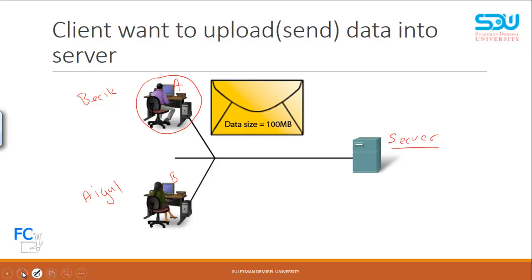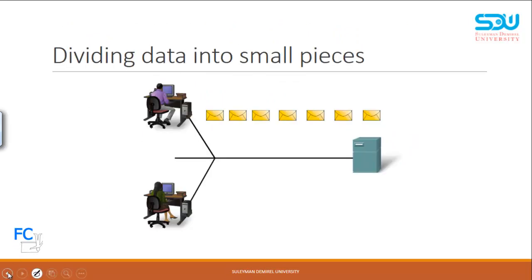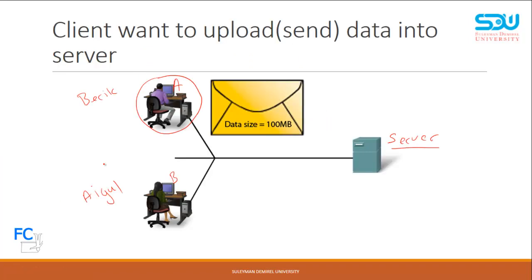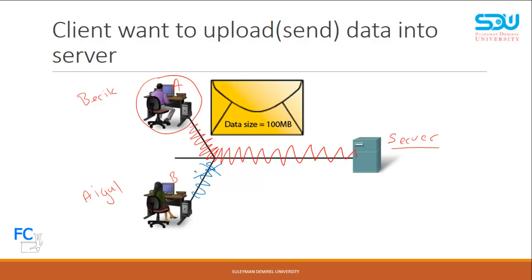When you send a single 100-megabyte packet, only Beric's computer will be able to communicate during that time. So when another user — let's say Igo — tries to make communication at the same time, the link is busy and she will not be able to transfer her files to the server. This is the first problem: only a single device will be able to communicate through this link at a time.